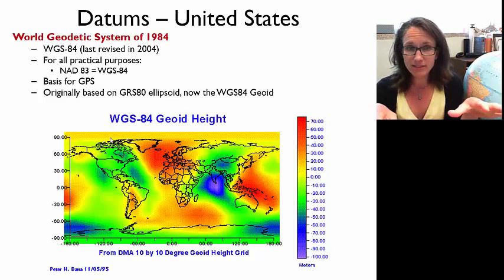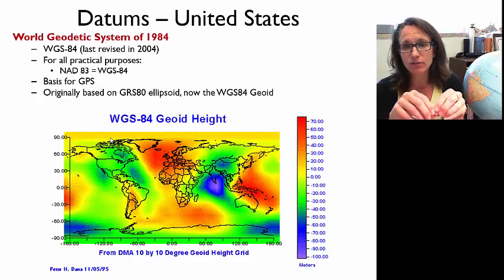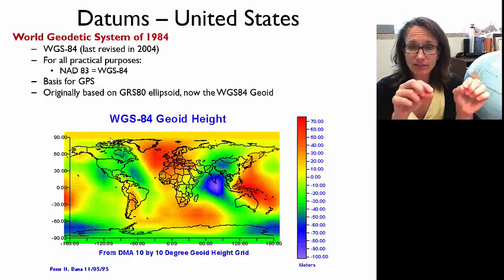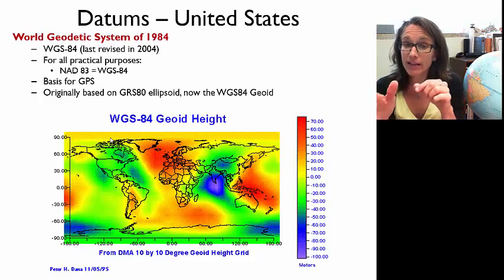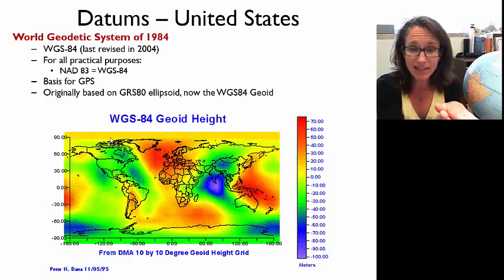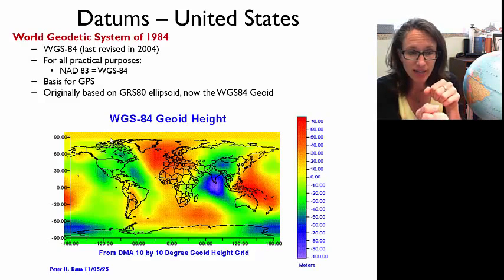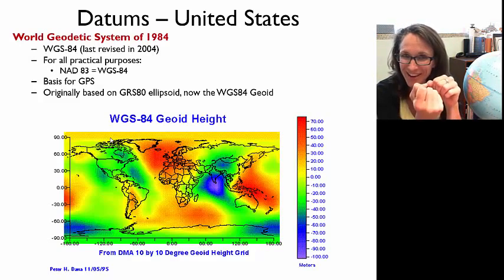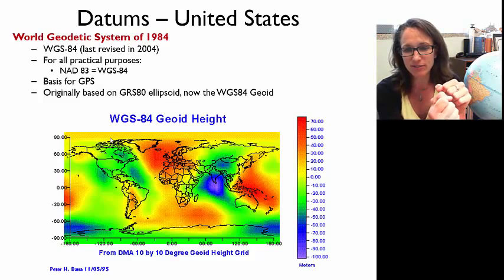All GPS data, no matter what GPS unit you're using, the raw data stored is referenced to the WGS 84 datum and stored in latitude, longitude, decimal degrees. We can convert it to other datums and coordinate systems, and you can display it on your GPS receiver in other coordinate systems referenced to other datums. But always at its core, that raw data is lat/long, decimal degrees, WGS 84.